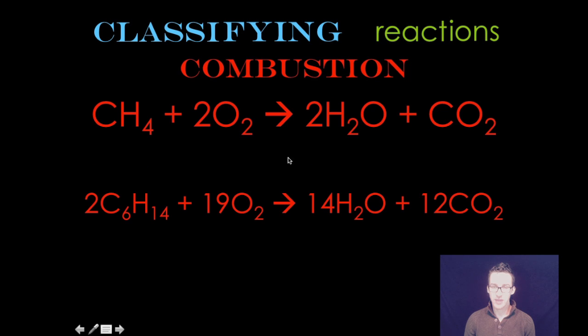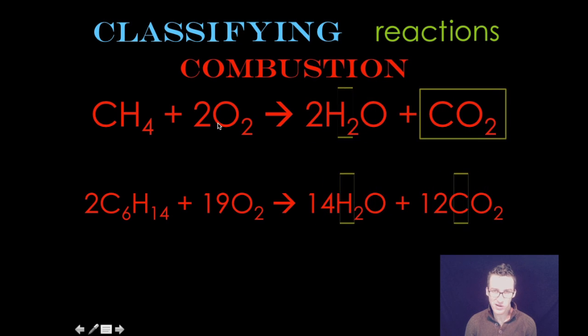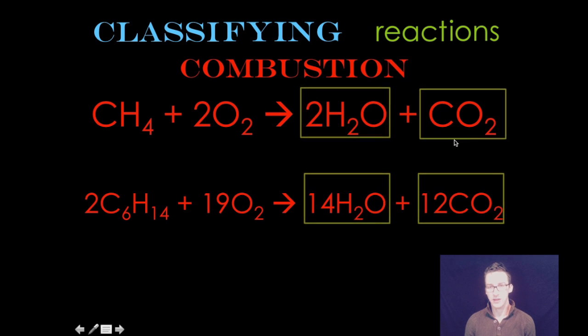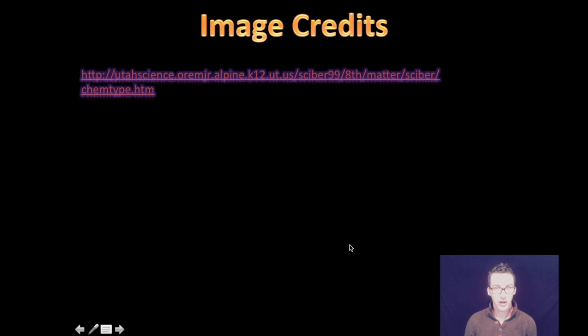So here are a couple examples of combustion reactions. These are your hydrocarbons. They are compounds that consist of just carbon and hydrogen. Oxygen is the other reactant that you need in order for combustion to occur. And your products are going to be water and carbon dioxide. All right, a quick link to some of those fantastic images that I used to help make analogies for the different types of reactions. And we're done.